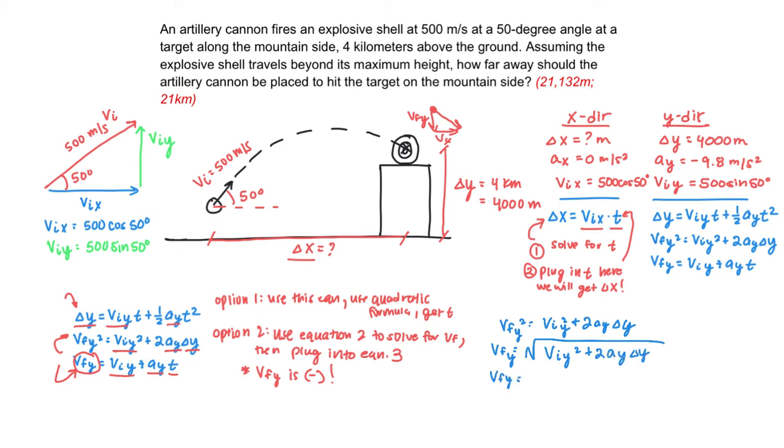That means that VFY is the square root of VIY, which was, in this problem, 500 sine 50 squared plus two negative 9.8, and then my delta Y was 4,000 meters again. And that gives me a final velocity in the Y direction of... Make sure you put a negative sign here. You won't get a negative from this square, but you got to make sure it's negative, because it is on its way back down. That gives me a negative 261.354 meters per second. And I'm keeping several decimal places here, because I will be using this in calculation later.